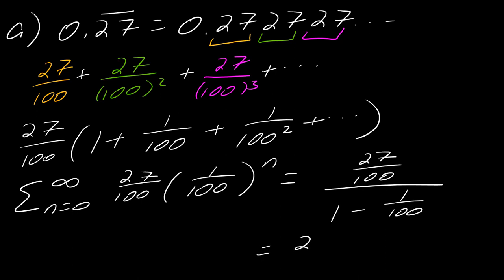And at the end of the day, this will turn into 27 over 99. So there's my ratio of two integers that I was looking for.